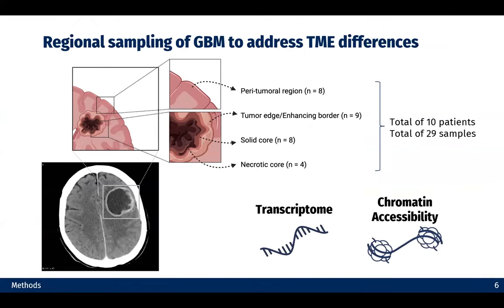In order to account for tumor microenvironment differences, we are collecting different regions of the same tumor. For the patients in our cohort, we collected four regions: the peritumoral region, which is beyond the identified tumor boundary; the tumor edge, which is the enhancing structure visible on the MRI image; the solid core; and the necrotic core, which is the dark part on the MRI image.